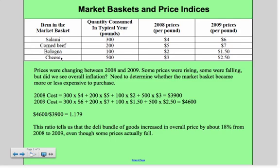In our example, we'll use an economy with only four products in their market basket: salami, corned beef, bologna, and cheese — and we'll put together what's called the deli price index. We take our 2008 costs and compare them to 2009 costs: 300 pounds at $4, 200 pounds at $5, and so on, compared to 2009 values of 300 at $6, 200 at $7, 100 at $1.50. The total costs are $39 and $46 respectively. The 2009 cost over 2008 gives a ratio of 1.179, meaning the deli bundle increased in overall price by about 17.9% from 2008 to 2009, even though some prices actually fell. That's very important — when measuring the rate of changes in inflation, we're looking at an entire market basket of goods; some prices go up and others go down.